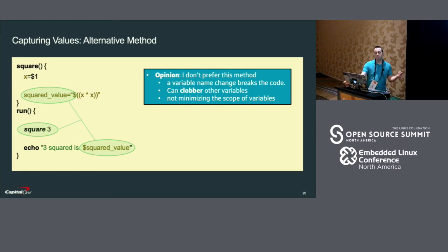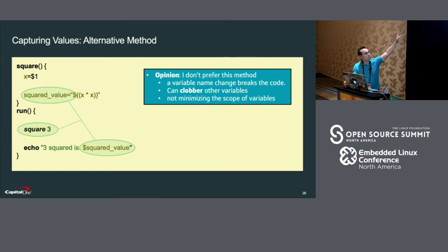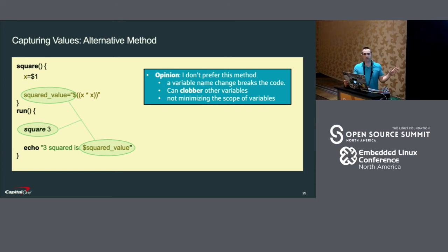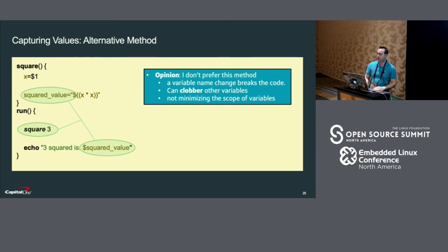There's an alternative method to capturing values that's easier for people to understand, but I would argue it's not maintainable. In this example, the sub-function just sets a variable — it's setting 'squared_value' here. Since it's visible to the calling function, it's able to refer to that, so this successfully prints out the squared value nine. However, this is very fragile code. If a developer renames the variable inside that function, then the run function is broken and nobody knows about it. Also, a separate function could easily override that value by accident. This demonstrates the common principle that you should limit the use of global variables.